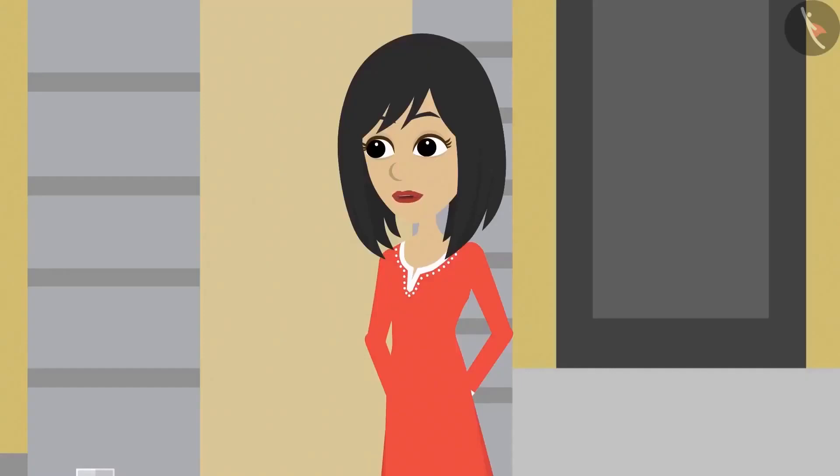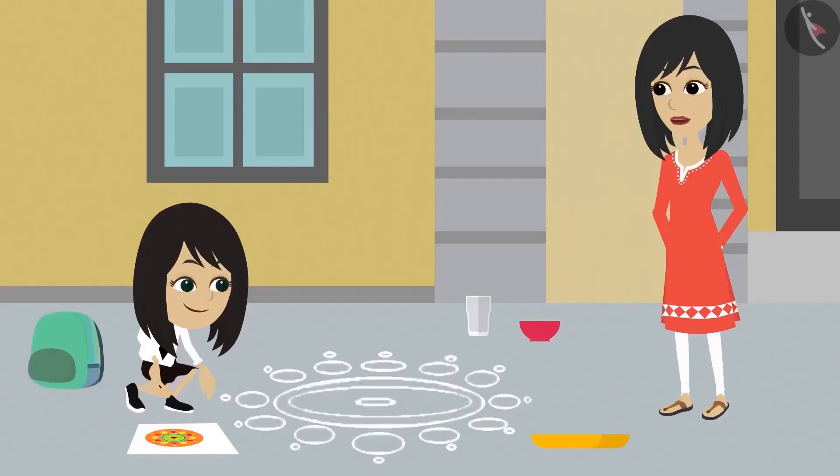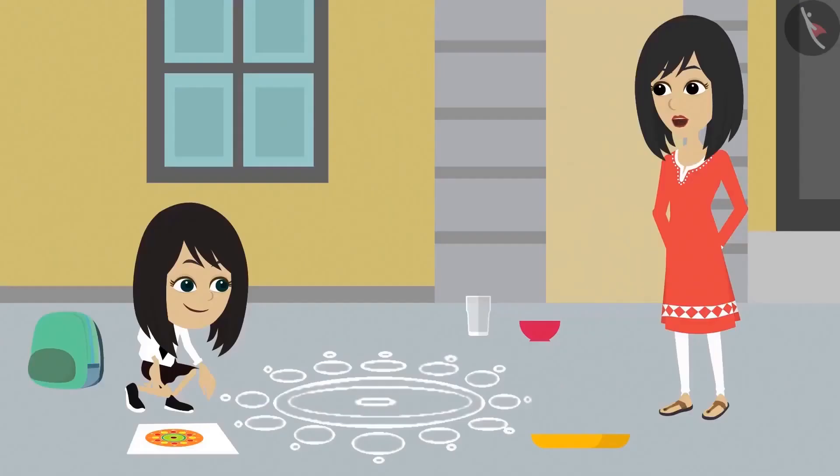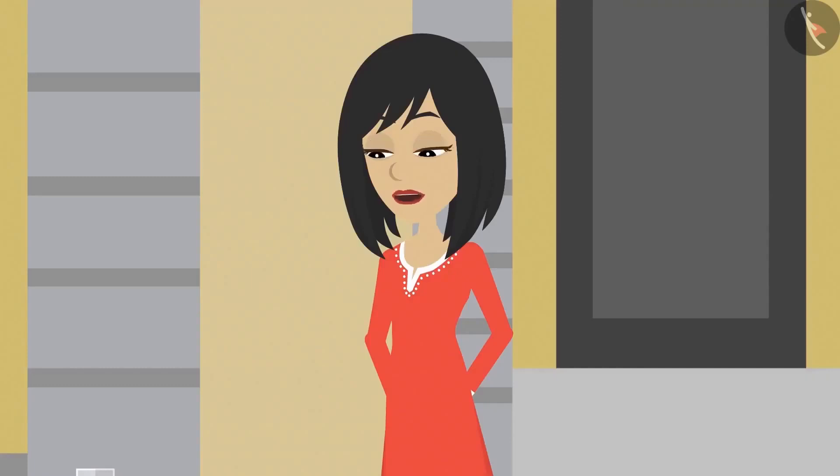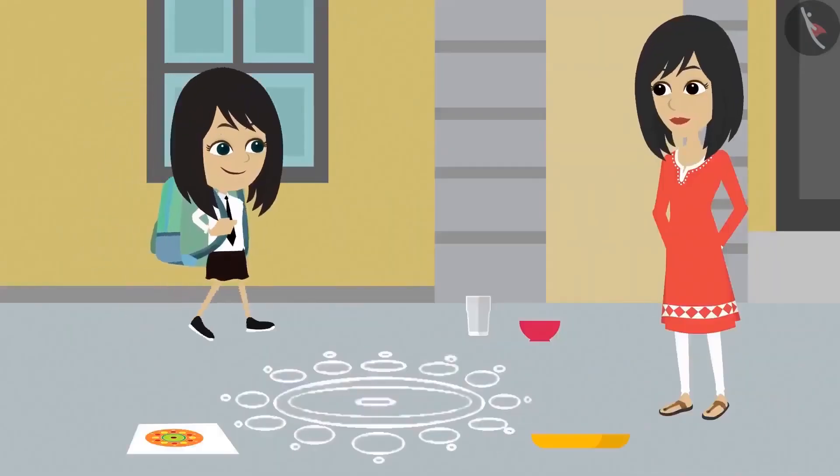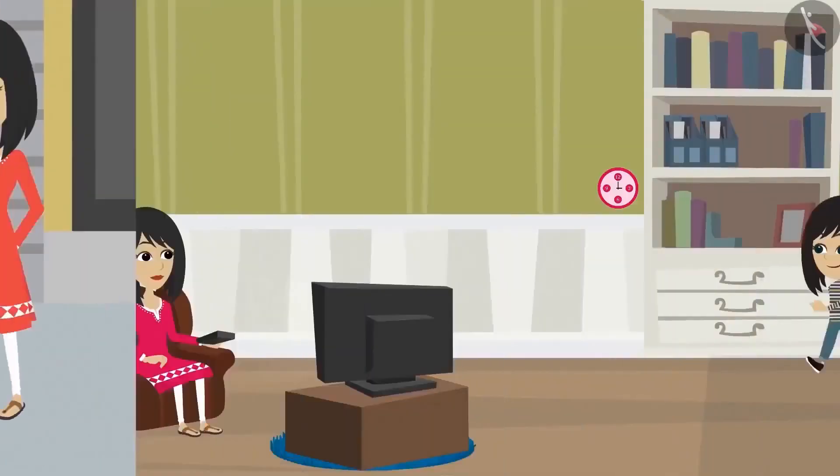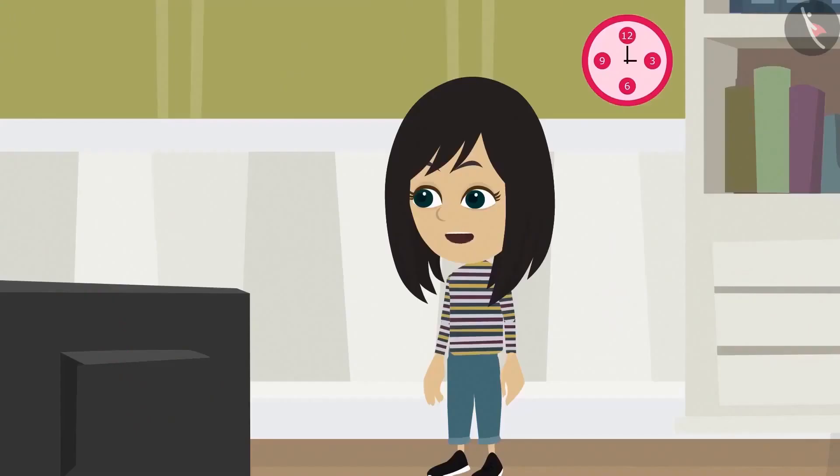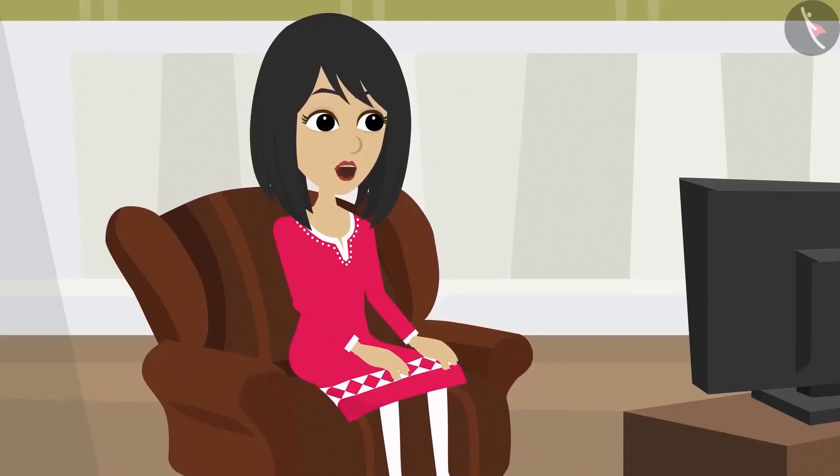Look, there are many objects in our house where a circle has been used in the design. After eating your food, try to make a list of things where a circle has been used in the design. Mommy, look, I have made a list of objects where a circle has been used in the design. Can you read out your list?